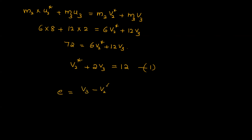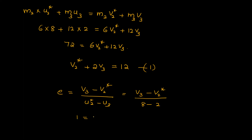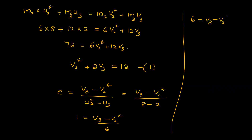For the elastic collision between the second and third ball: V3 minus V2* divided by U2* minus U3 equals 1. So V3 minus V2* = 8 minus 2 = 6. This is the second equation. Solving both equations gives V2* = 0, proving that the second ball (6 kg) is also brought to rest by this impact.